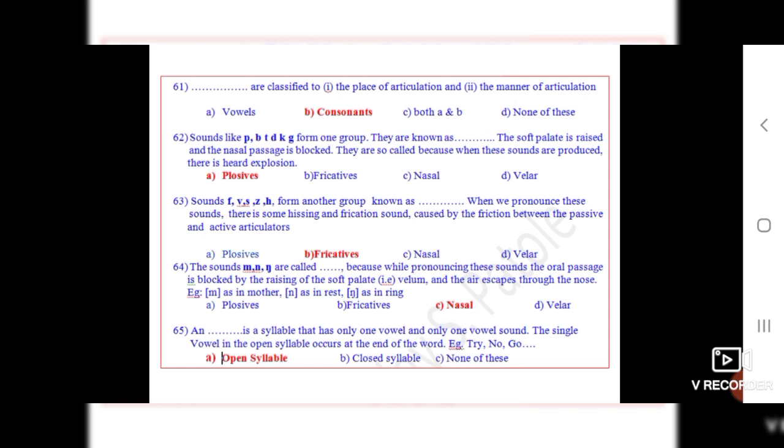Question 62: Sounds like P, B, D, T, K, G form one group. They are known as dot dot. The soft palate is raised and the nasal passage is blocked. They are so called because when these sounds are produced, there is heard explosion.